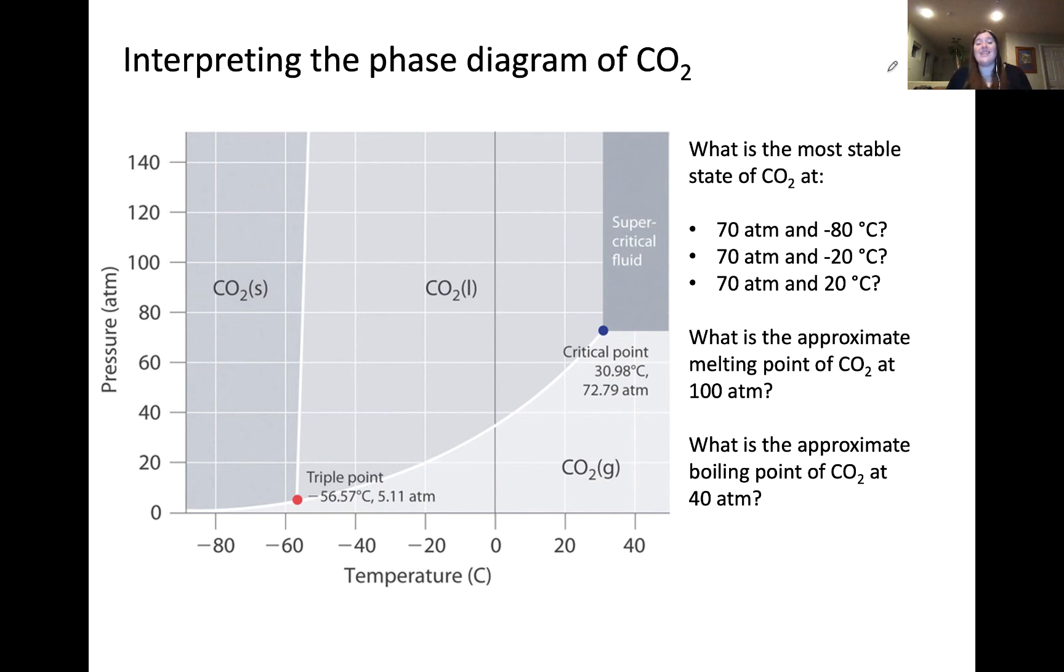Now, let's practice interpreting the phase diagram of a different substance, CO2. Pause the video and predict the most stable state at these different pressure and temperature points. Also, consider the approximate melting point of CO2 at 100 atmospheres and the approximate boiling point at 40 atmospheres. When you're done, unpause the video and we'll review the answers.